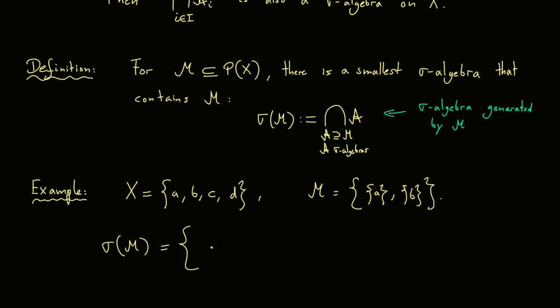We immediately know two things. First, sigma(M) is a sigma algebra, so it contains the empty set and the whole set X. Next, it's a sigma algebra that contains M, so {A} and {B} must be inside sigma(M). Thinking about the other properties: all countable unions must be inside the sigma algebra, so the union {A, B} also has to be inside. All other unions we can form with these four sets either give back X, the empty set, {A}, or {B}, so those are all the unions we can form.